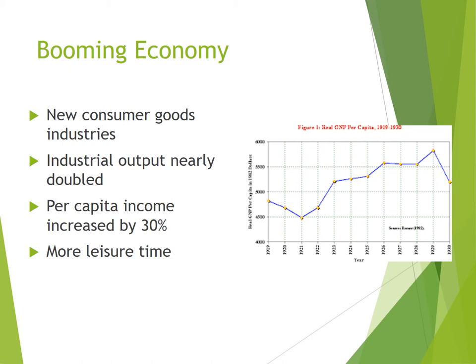The most explosive growth took place in industries producing consumer goods: automobiles, appliances, furniture, and clothing. The national per capita income increased by 30% in 1929, and more Americans had more leisure time for things like spectator sports and amusement parks.